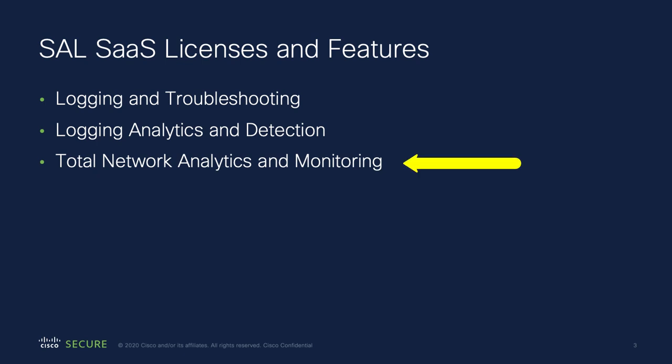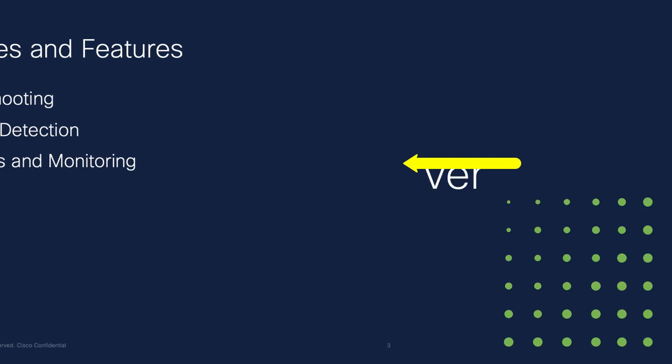With the Total Network Analytics and Monitoring license, StealthWatch Cloud applies dynamic entity modeling to both your FTD events and your network traffic and generates observations and alerts. This license also provides all the functionality of the other two SAL licenses.